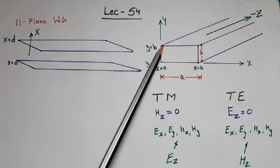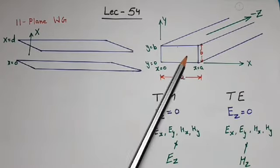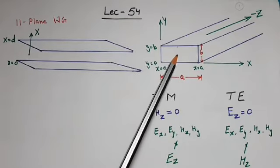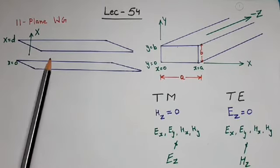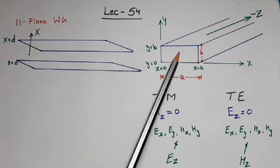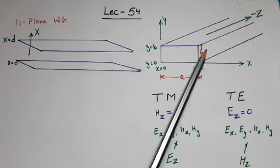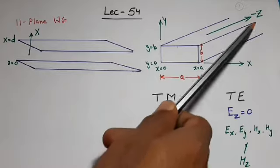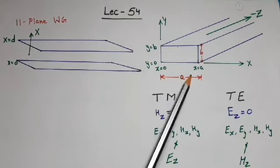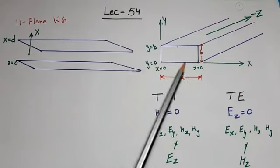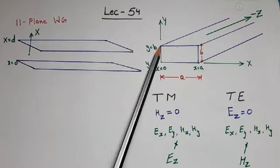In rectangular waveguide we bring restriction in the y direction also, so now it looks like a hollow rectangular pipe. In this rectangular pipe the electromagnetic wave will propagate in the z direction after striking the walls in both x and y directions. In the parallel plane waveguide the wave was striking only the top and bottom planes, but now in the rectangular waveguide the wave strikes top, bottom, left, and right planes. After multiple reflections the wave propagates along the z-axis. Generally, the separation in the x direction is bigger than in the y direction; x direction separation is denoted by 'a' and y direction separation is denoted by 'b'.